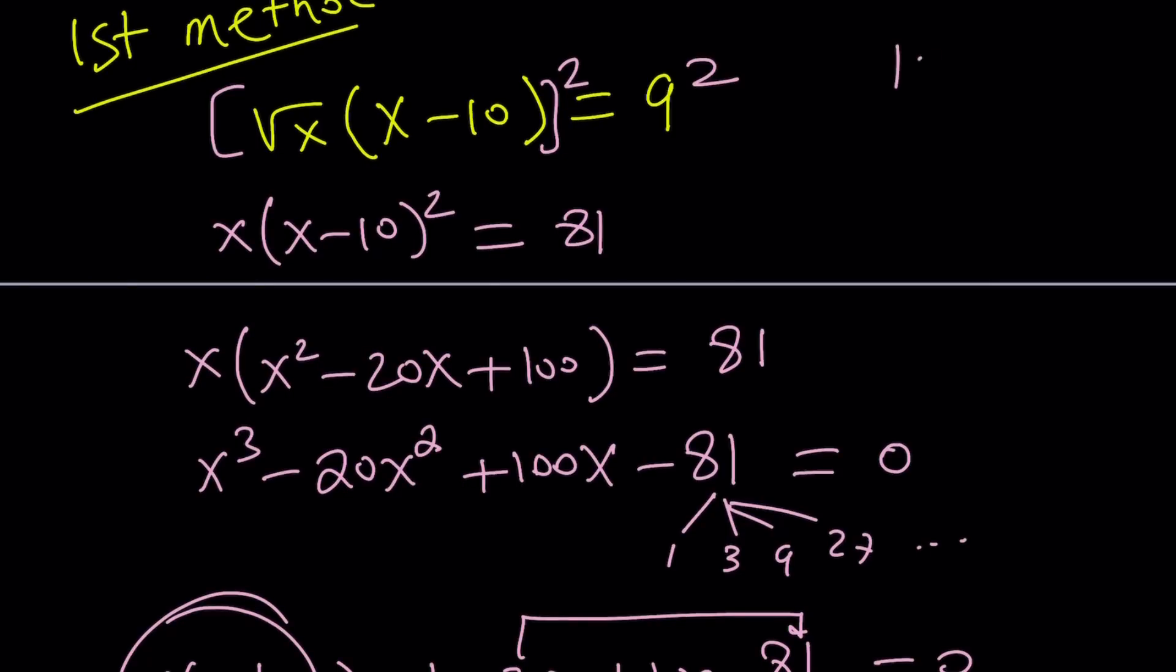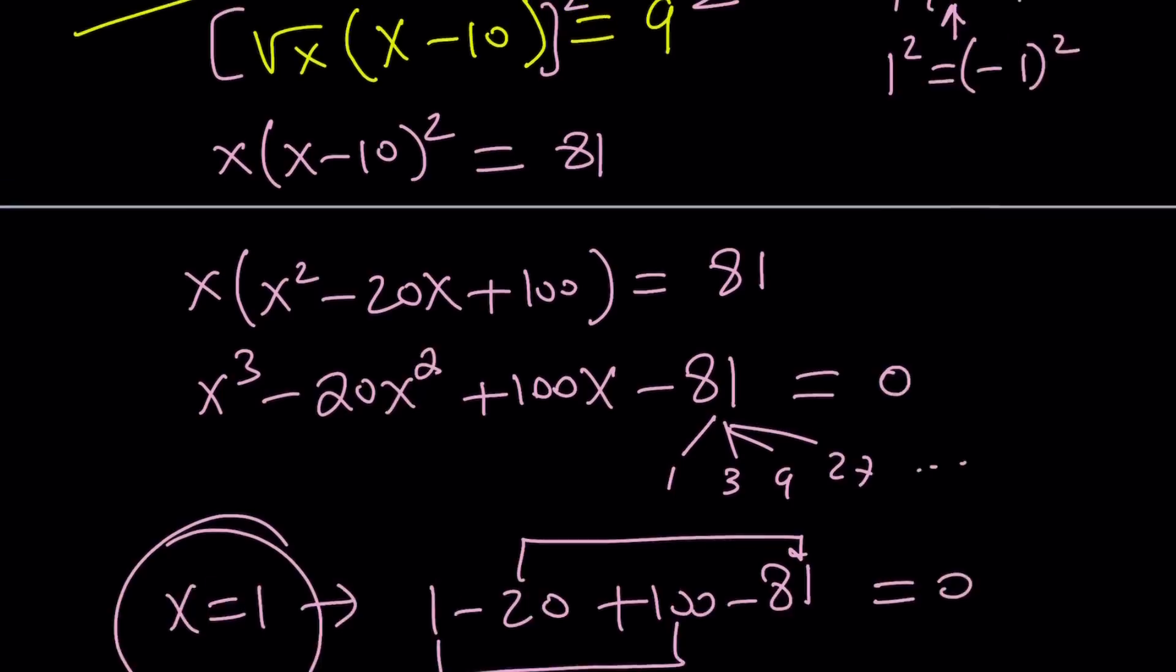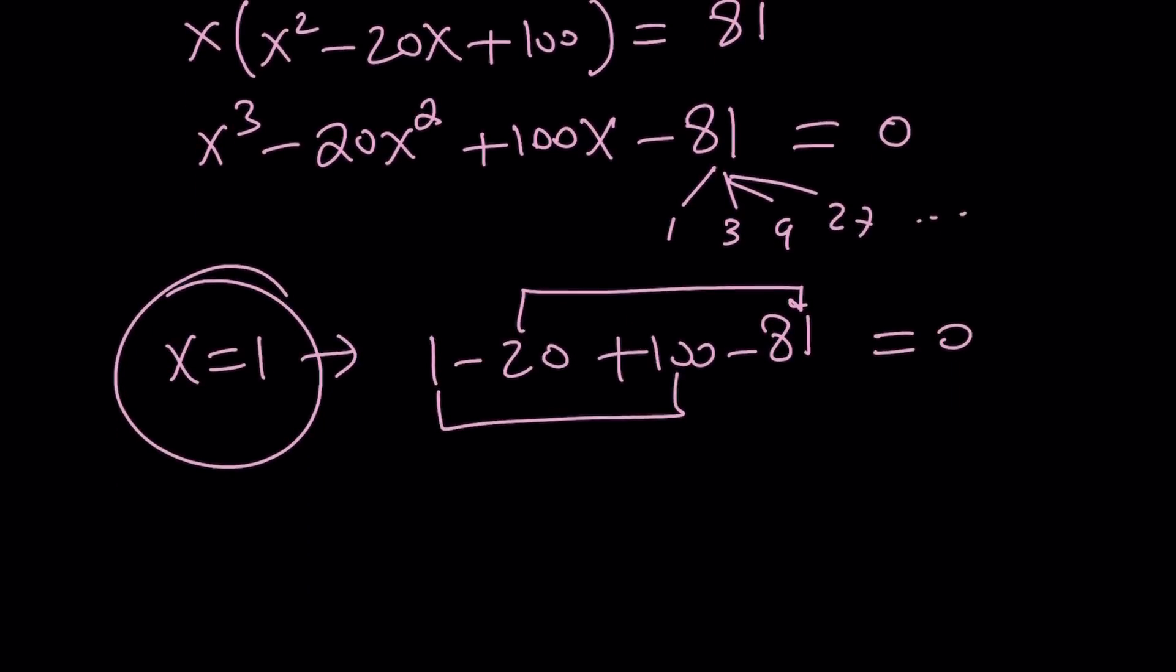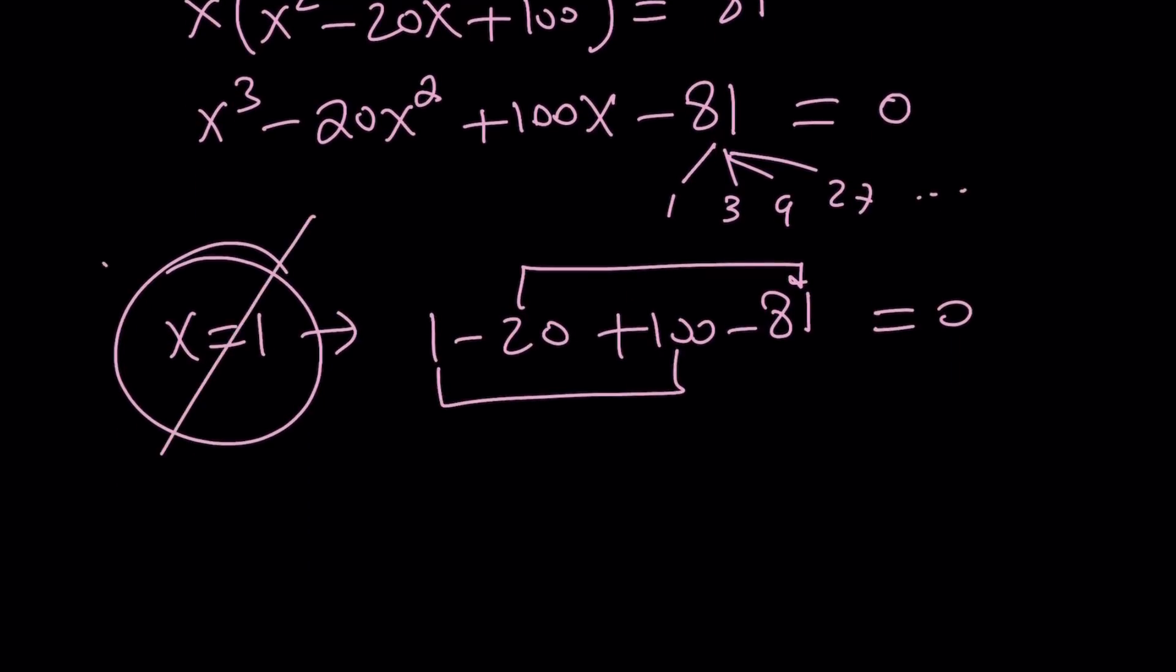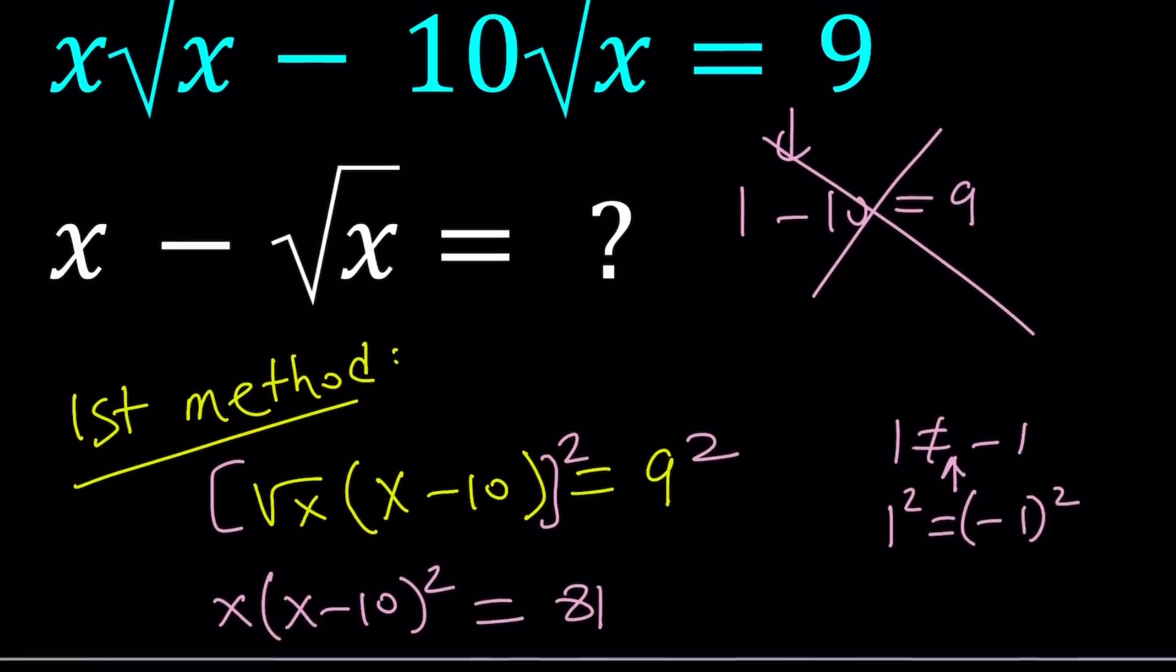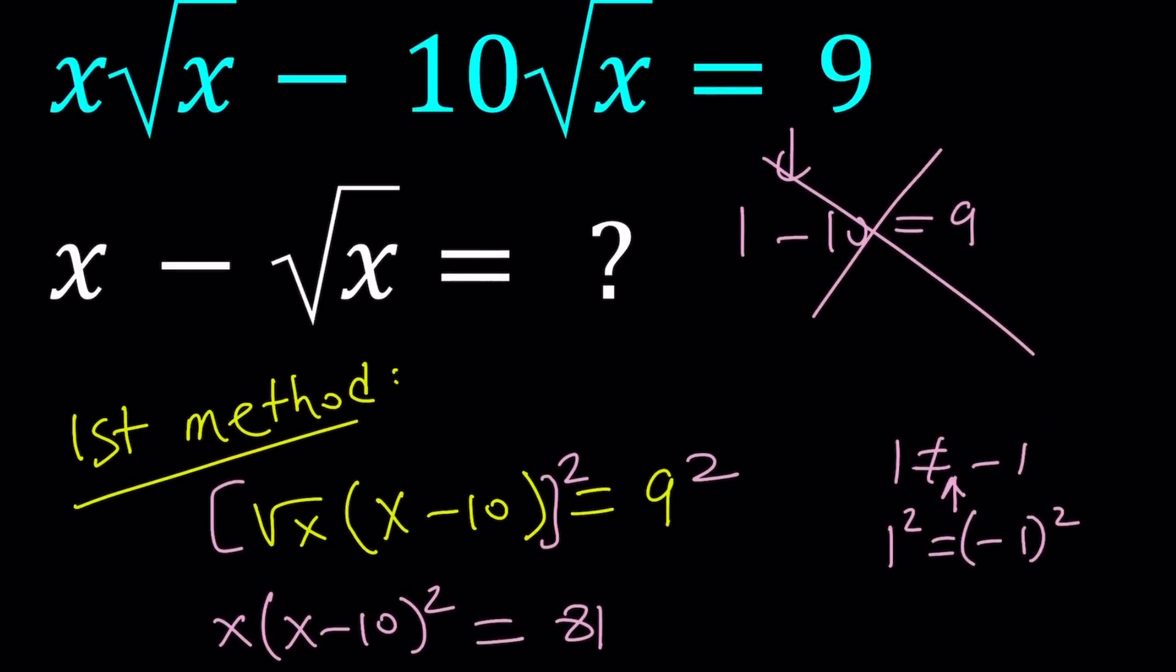Because when you square both sides, you're getting rid of the negatives. In other words, 1 does not equal negative 1, but 1 squared equals negative 1 squared. Make sense? So you can't conclude that because 1 squared equals negative 1 squared, 1 is equal to negative 1. Anyways, so these are called extraneous solutions. They just pop up when you square both sides, but they don't actually satisfy the original problem. So x equals 1 is invalid. And if you plug it into the second expression, you're going to get 0, but unfortunately, that does not work.